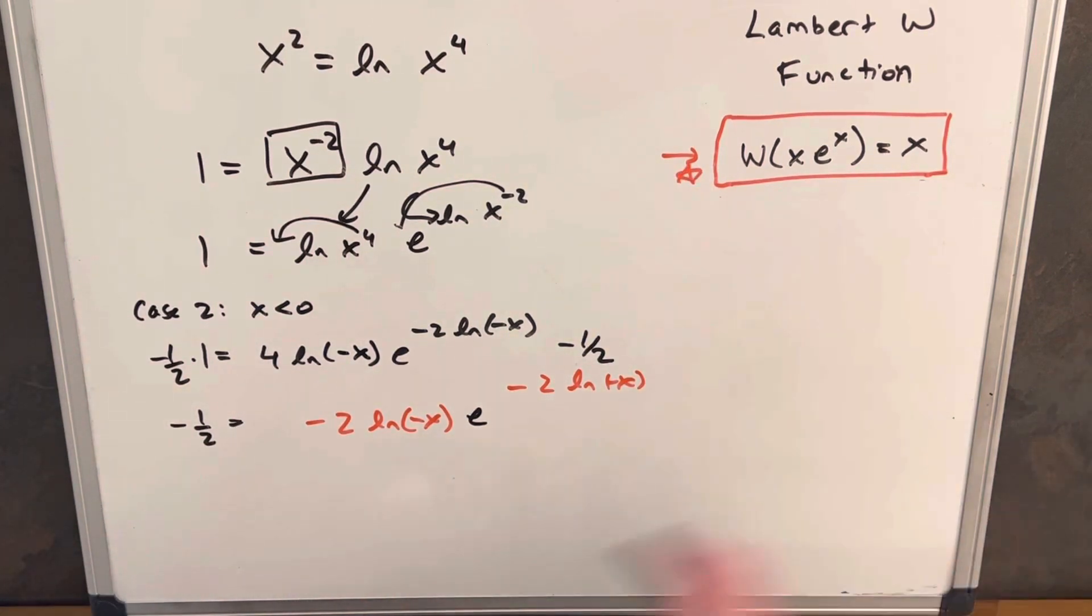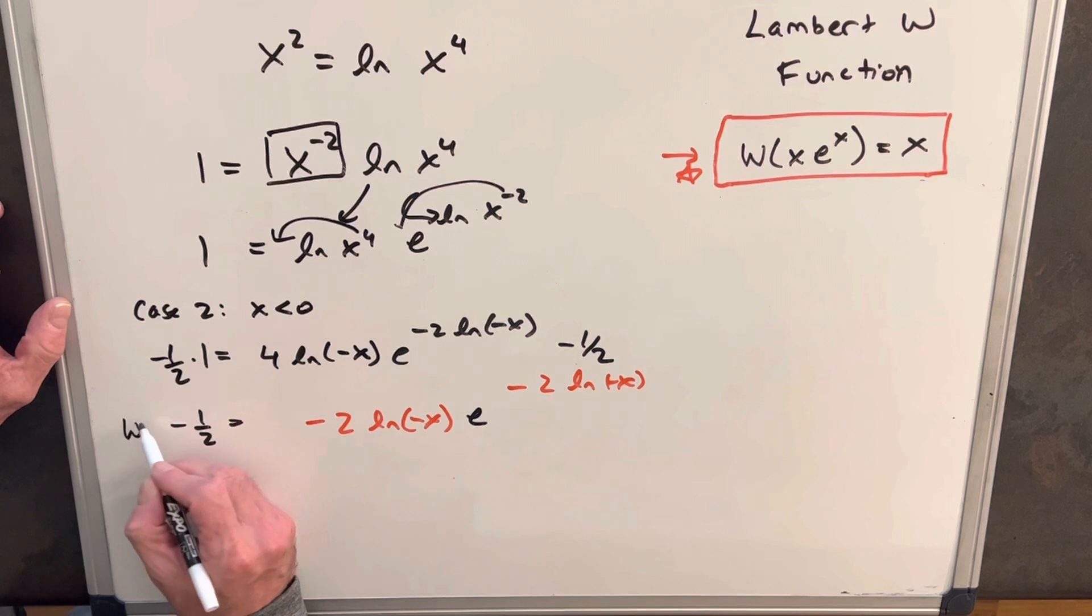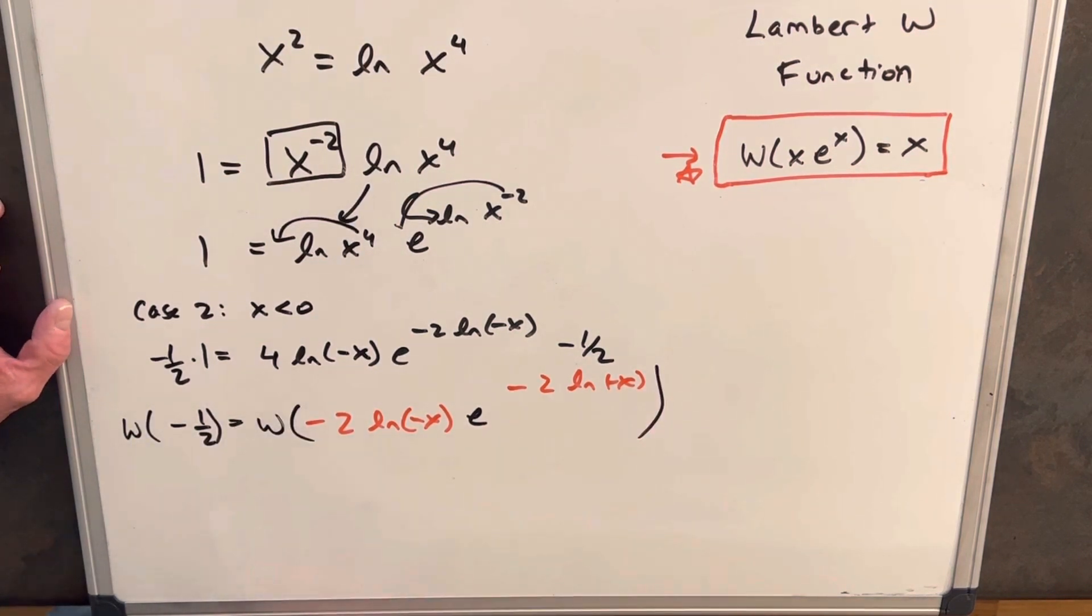So we'll apply the Lambert W function on both sides. We'll have our minus 1/2, Lambert W of minus 1/2 again. We'll apply it here.